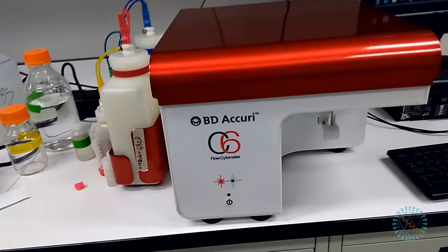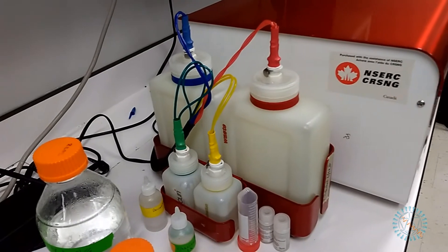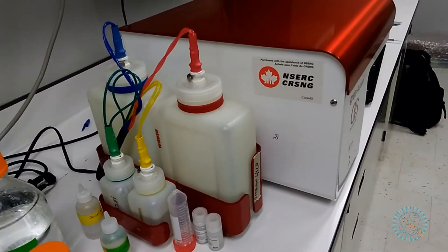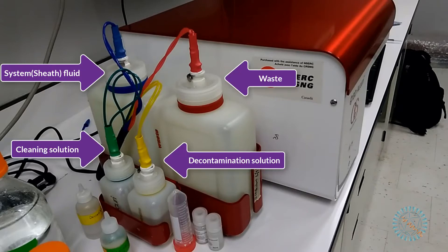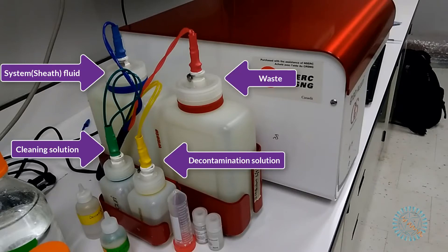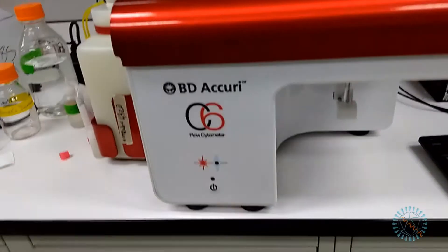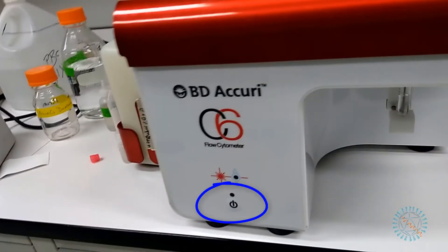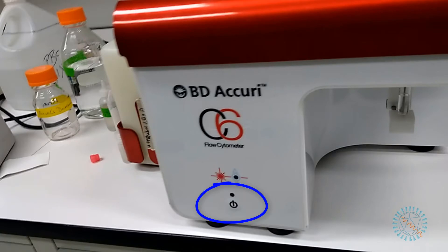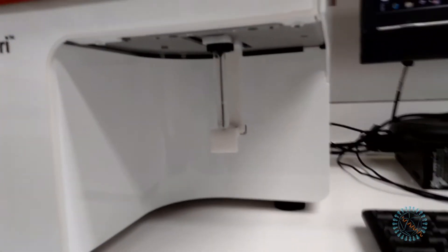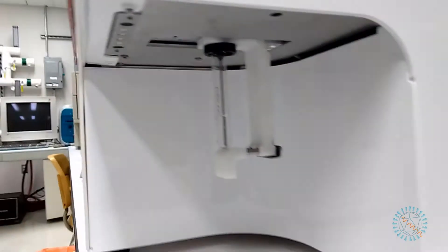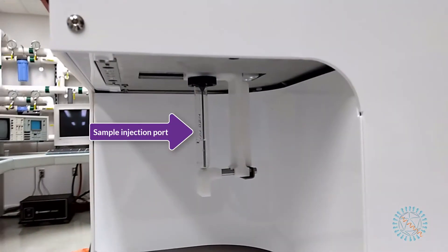But let's get back to the Accuri C6 cytometer so I can show you its parts. As I said before, the instrument is fairly simple. On the left hand side we have containers for the system fluid, the waste, the cleaning solution, and the decontamination solution. Moving to the front, we have a single button used to turn the equipment on or off and when needed activate the cleaning cycle. On the right hand side we have the sample injection port and the sample stage which can accommodate several types of tubes including any brand of 12x75mm tubes and most microcentrifuge tubes too.